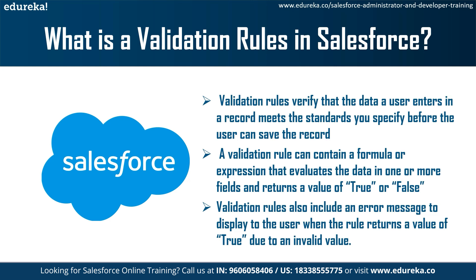Validation rules can also include error messages to display to the user when they enter invalid values based on specific criteria. Using these rules effectively contributes to the quality of data. For example, you can ensure that all phone number fields contain a specific format, or that the discount applied to a certain product never exceeds a defined percentage.